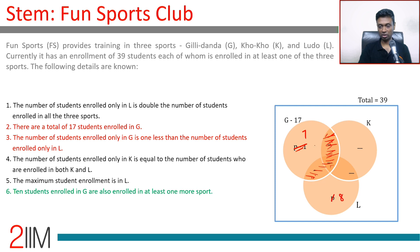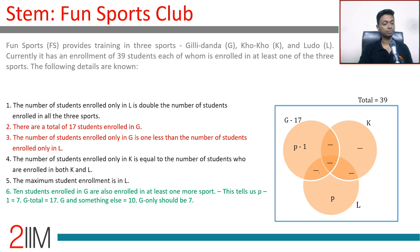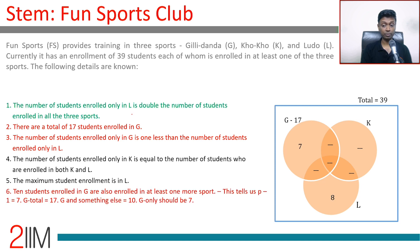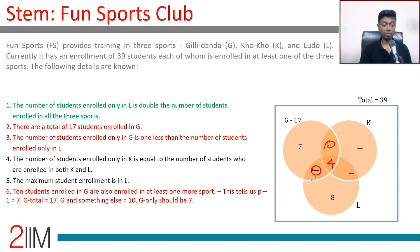So only-G is 7 and only-L is 8 — that's a big giveaway. Now, only-L being 8 is double the all-three region, so all-three equals 4. The three intersection regions of G add up to 10, and one of those is the all-three region which is 4, so the remaining two regions of G add up to 6. The maximum student enrollment is in L — we'll use that constraint next.